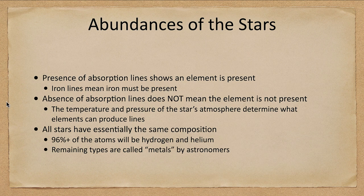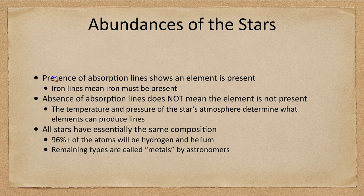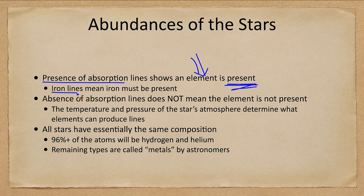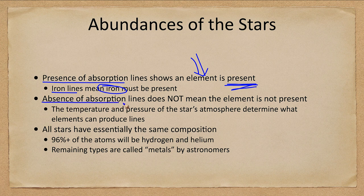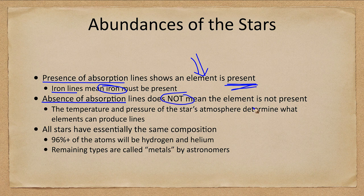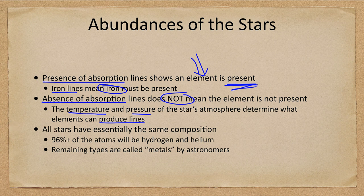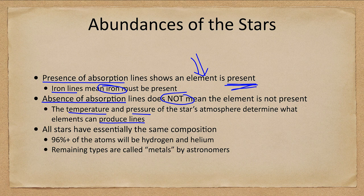Abundances. What are stars made up of? First of all, the presence of an absorption line shows that the element is present. We know that it is there if we see the absorption line. If we see iron lines, then iron is in that star. However, the converse is not true. An absence of absorption line does not mean the element is not present. Remember that the temperature and pressure of the atmosphere determine what elements can produce lines. So a very cool star will not show much in the way of helium lines, even though helium is still the second most abundant element in that star.